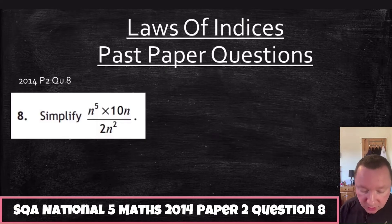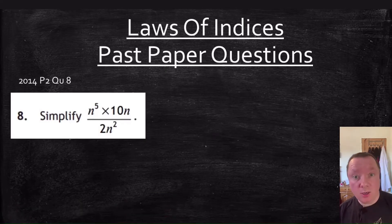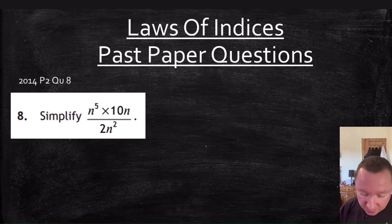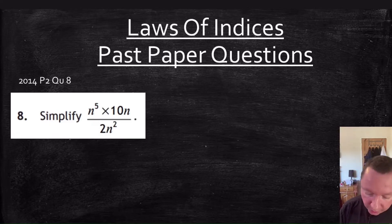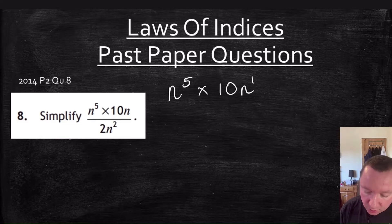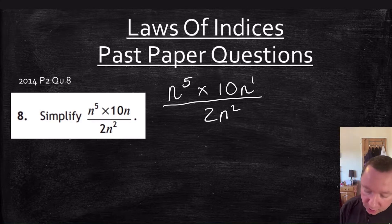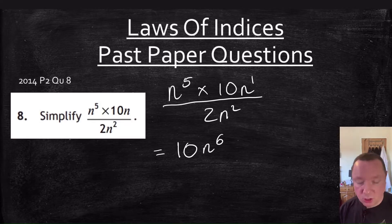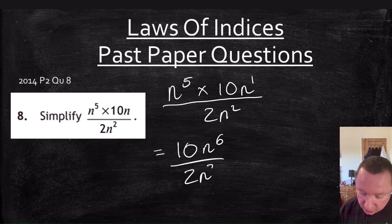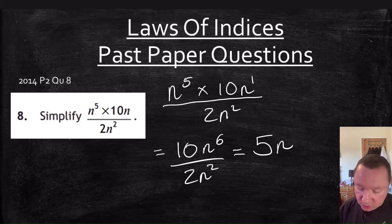Let's look at some specific past paper questions now. This is from 2014, paper two, question eight — a calculator question, though you probably don't need it. You've got: simplify n to the power of five times 10n, over 2n squared. That's n to the five times 10n to the power of one, over 2n squared. Dealing with top and bottom separately: add the powers on top to get 10n to the six, then 10 divided by 2 is 5, and take away the powers: 6 minus 2 is 4. Answer: 5n to the 4.